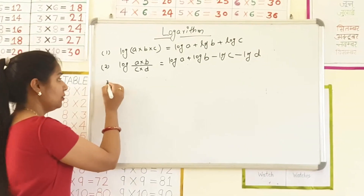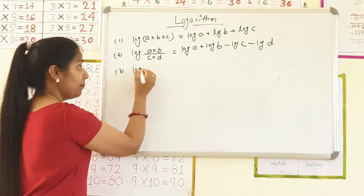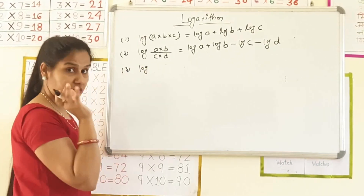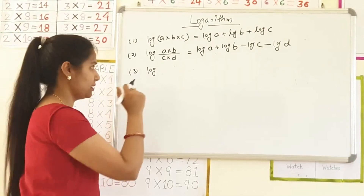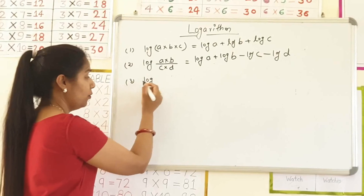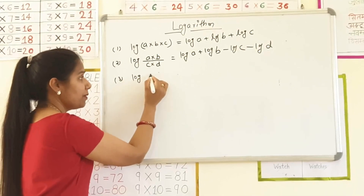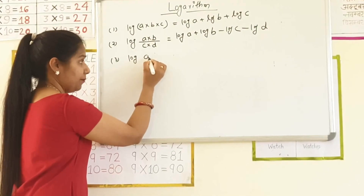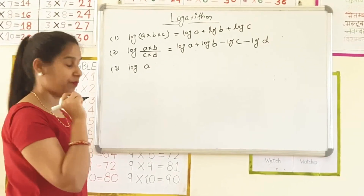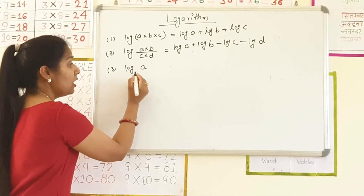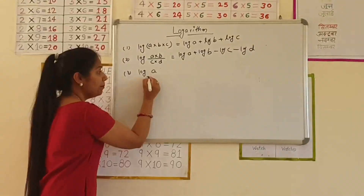I am using the third property. Now, third property — I will explain it to you. If I have written about log and log, I will use base.